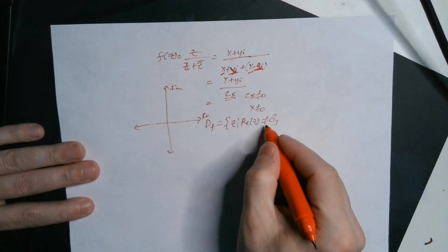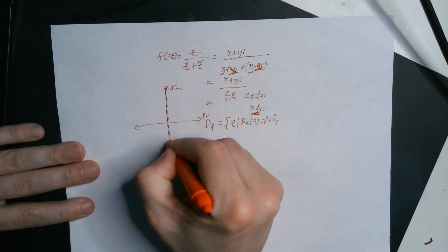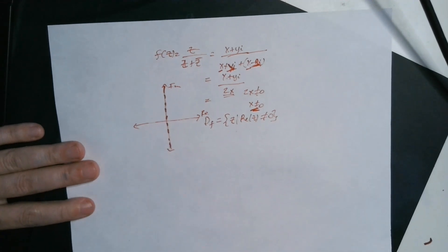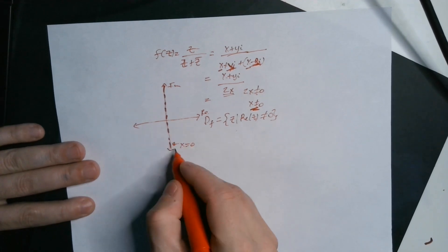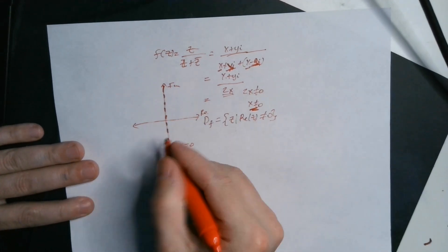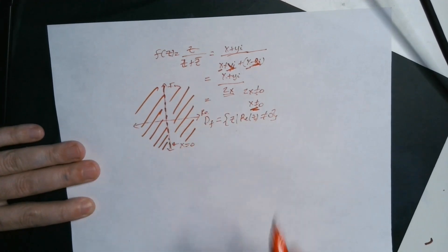Okay, and now because x cannot be equal to zero, that means no number from here can be used from the dashed line because here x is equal to zero. So you cannot use complex numbers from here. But any other number from here can be used, no problem.